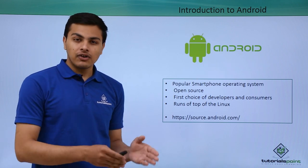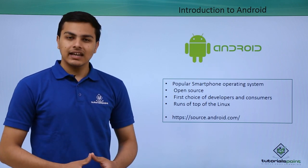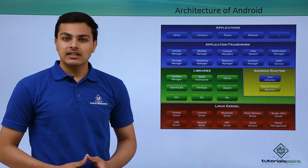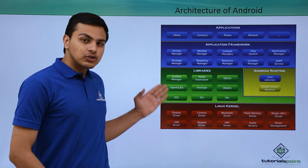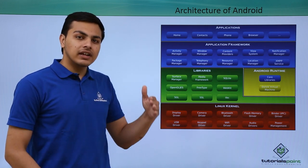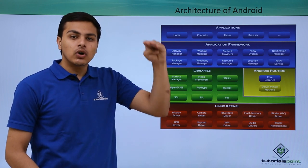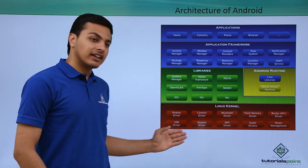Once we know what Android is, let's talk about its architecture. Android architecture is divided into four layers. As I told you earlier, Android runs on top of Linux, so our first layer is the Linux kernel.